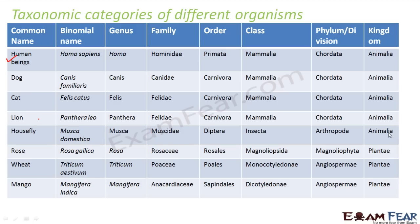Here you can see that human beings, dog, cat, lion, and housefly all fall under the same kingdom, Animalia. Whereas rose, wheat, and mango all fall under the kingdom Plantae. You can go through these yourselves and try to understand how they have been put into the same family, or why they have been placed in the same class or order.